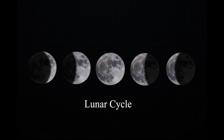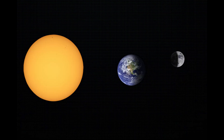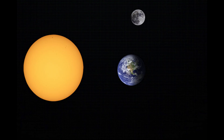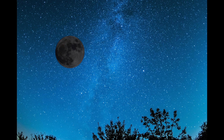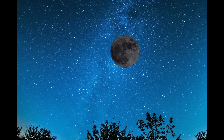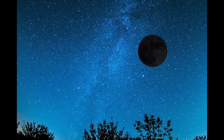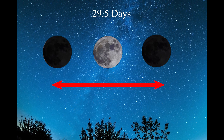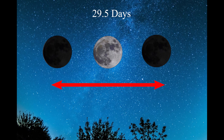This repeating pattern of moon shapes is called the lunar cycle, or more specifically the phases of the moon. It happens because of how sunlight falls on the moon as it orbits around Earth. This entire cycle from one new moon to the next takes about 29.5 days and is called the synodic month.